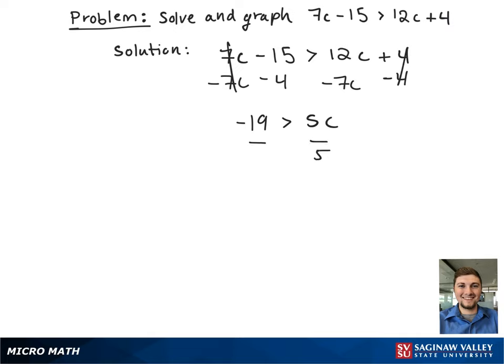To get c by itself, we're going to divide both sides by 5. This gives c is less than negative 19 fifths. Negative 19 fifths happens to be exactly negative 3.8.